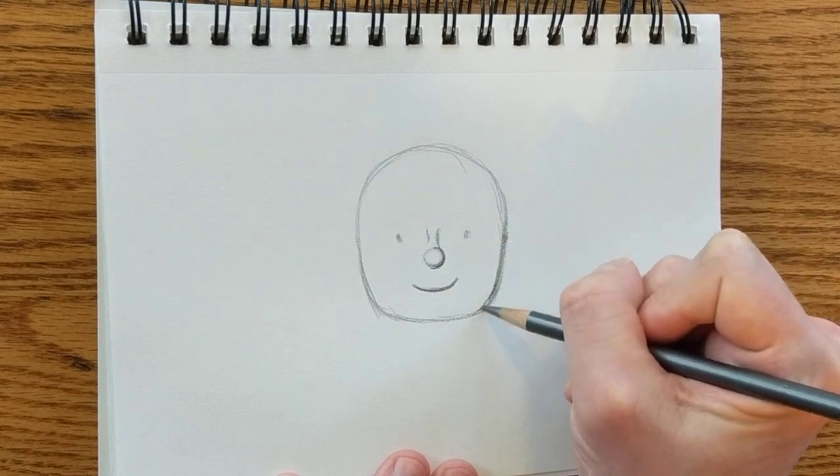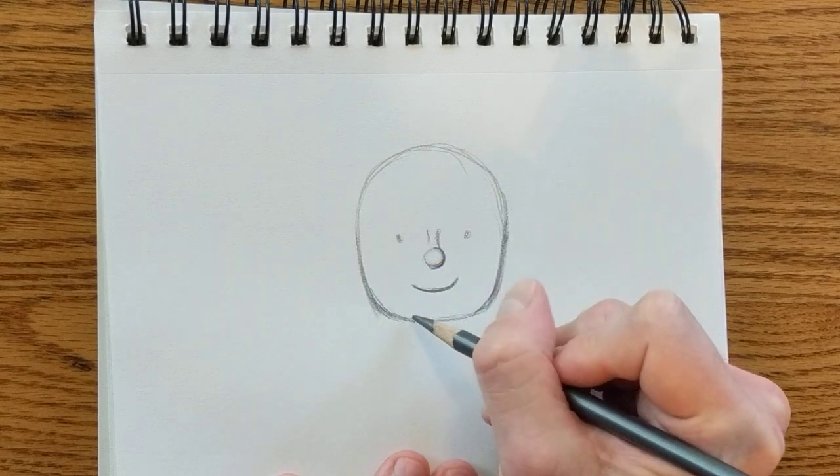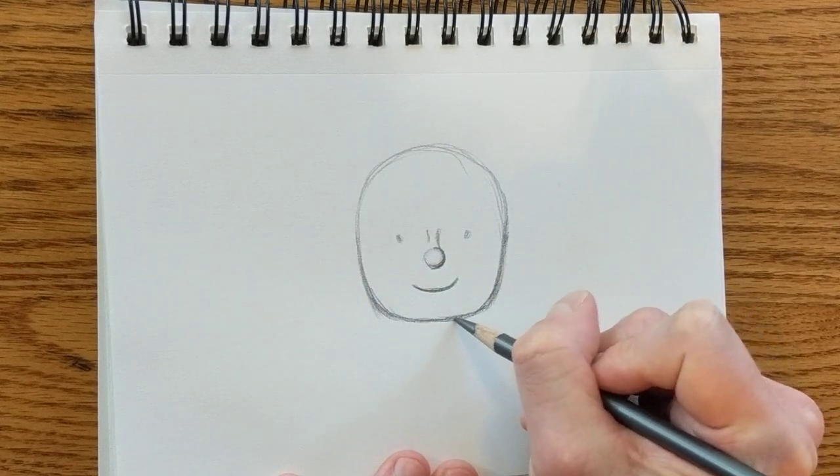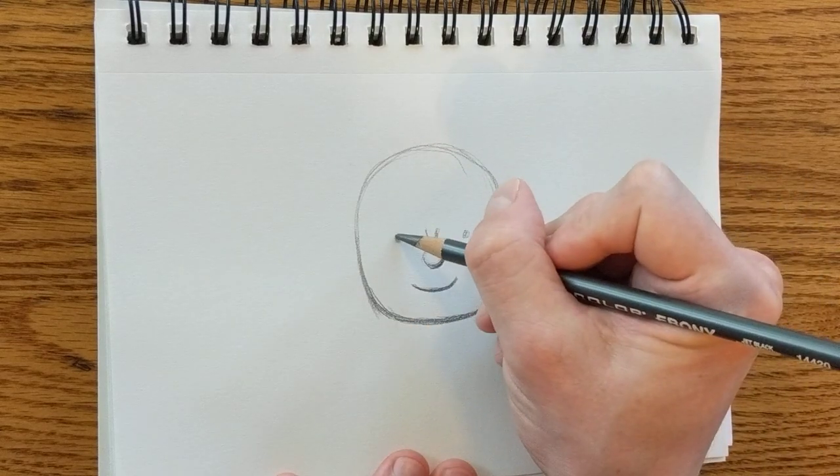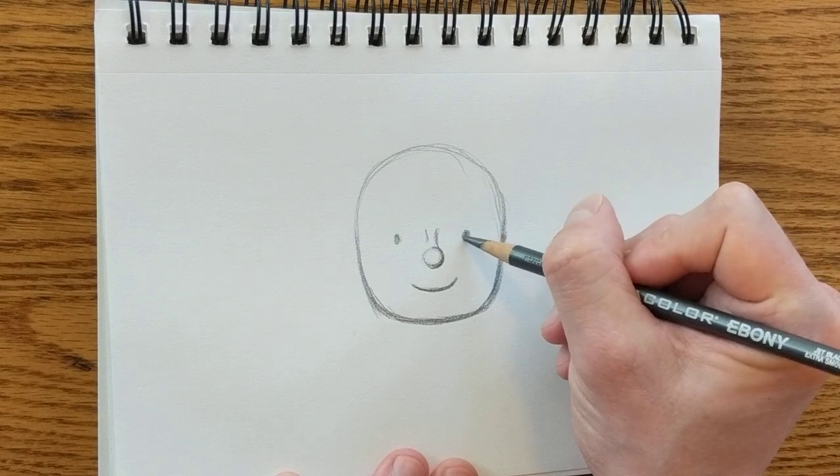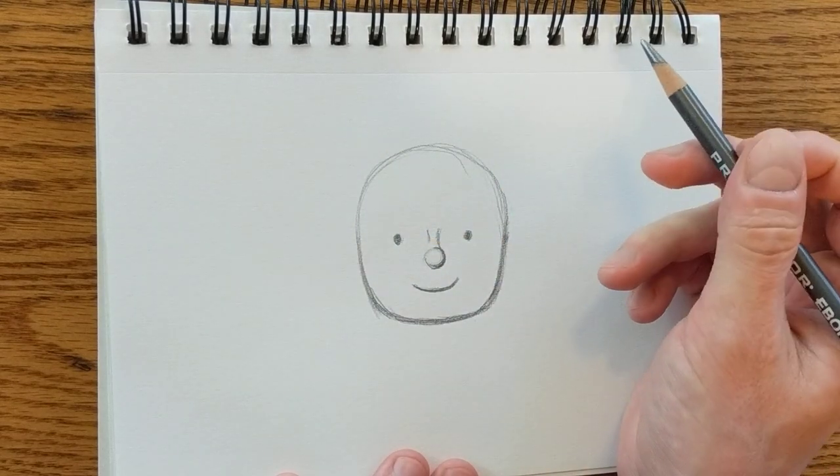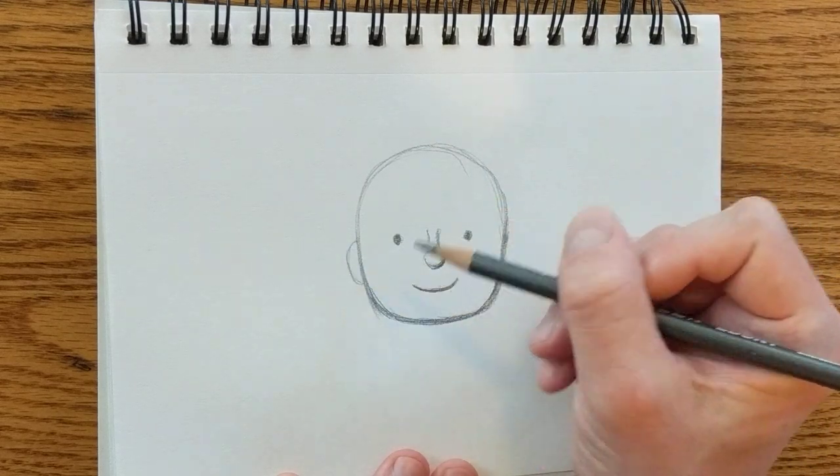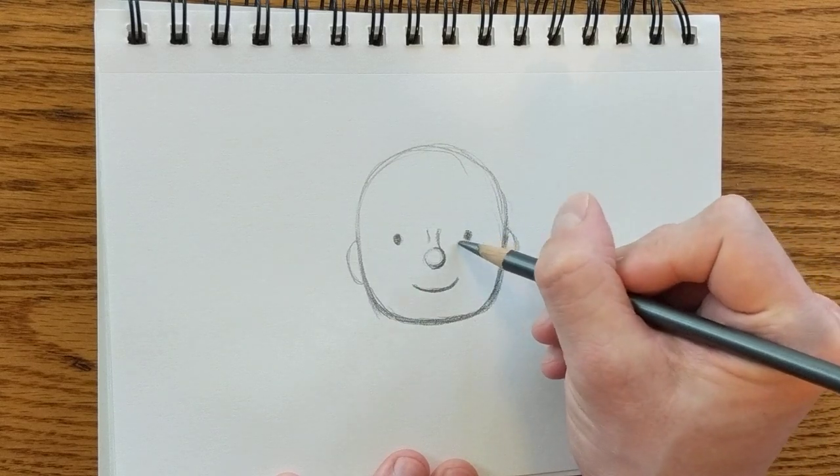So I'm going to just make his head a little bit narrower now that I have some basic facial features. And I can see that maybe I made his jawline a little too wide. I'm going to draw these in a little bit darker.